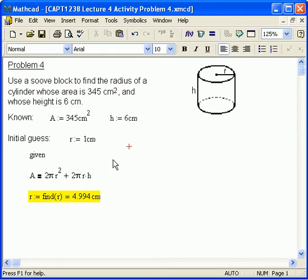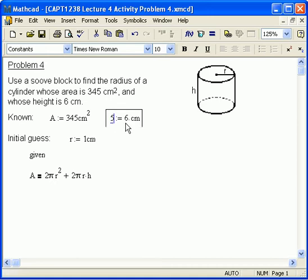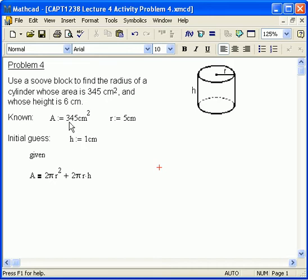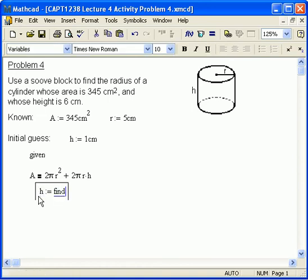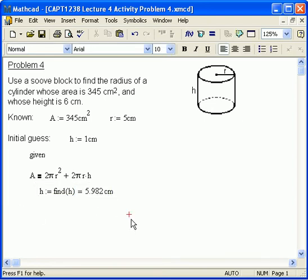Okay, we could also do this. We could have modified this problem and said, you know what, let's do this. Let's say that we know what R is. Let's say R is five centimeters. And what we want to do is find H and move this around. So we know the area, we know the radius, and we're going to go after H. So we guess H is, say, one centimeter, and then define H as the find of H and evaluate that. And there we go. It's about six centimeters, as it turns out.